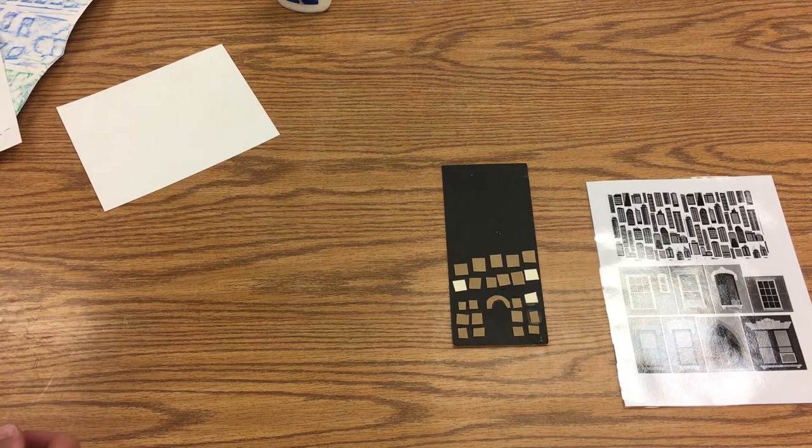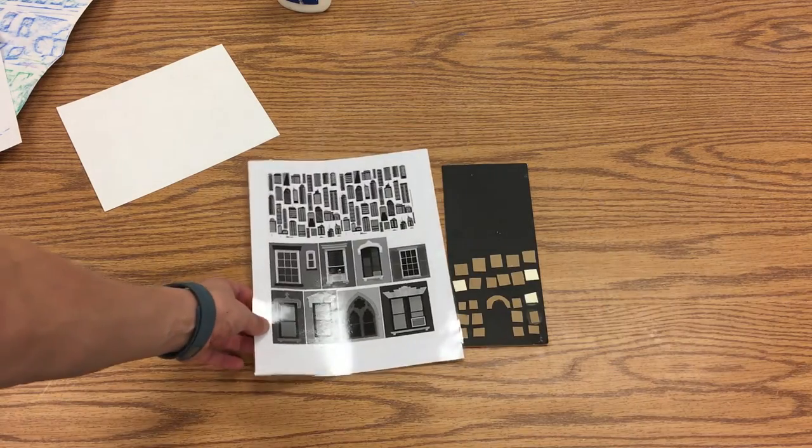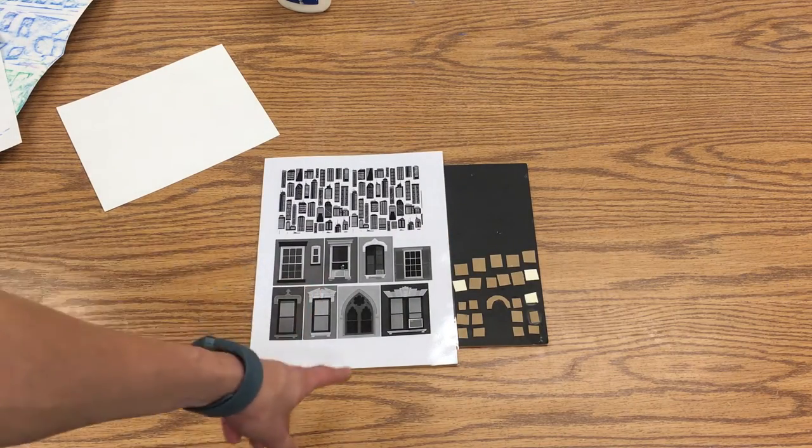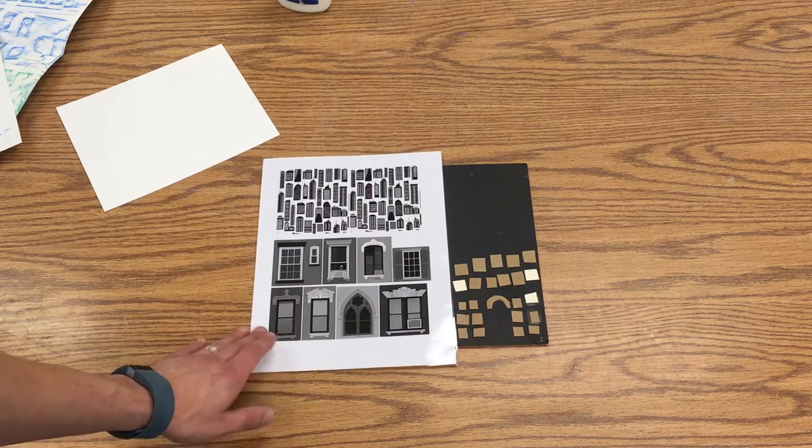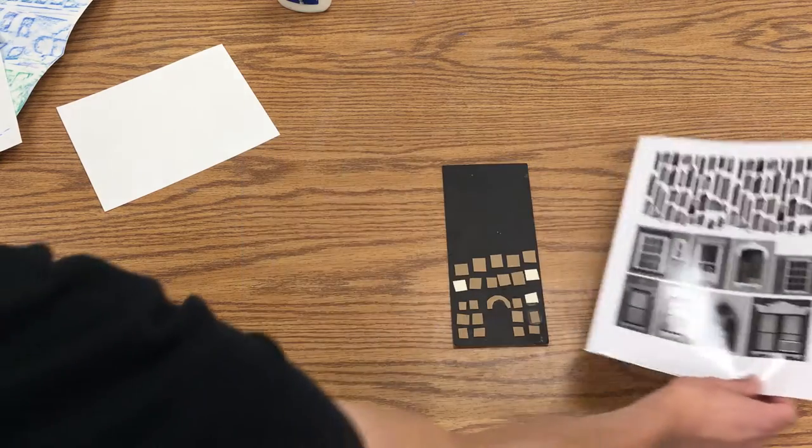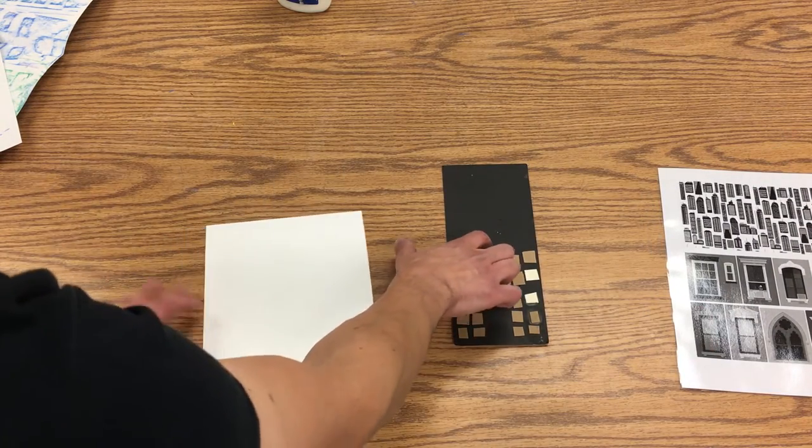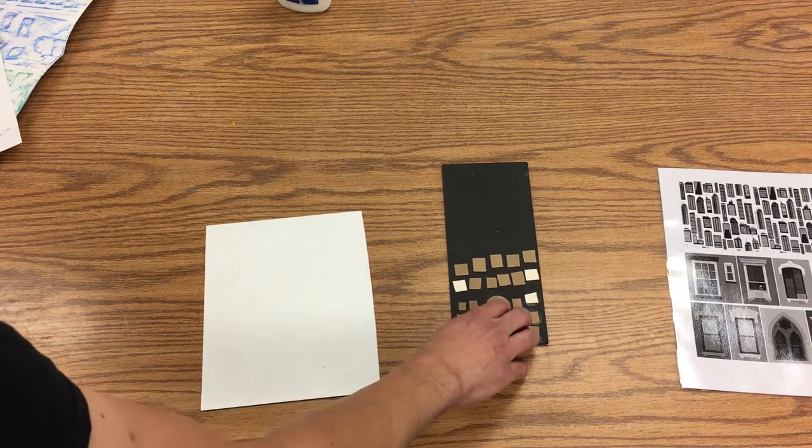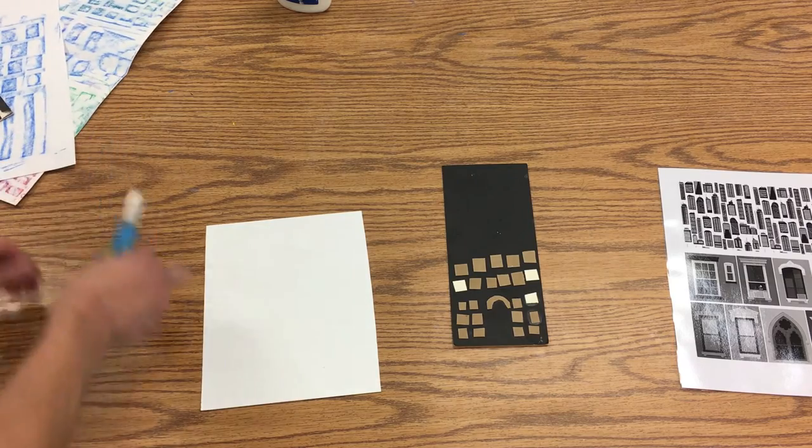I also have this nice reference sheet here that shows different kinds of windows and city buildings and then just different skyscraper designs. But you can take the thinner pieces and glue them on here to make windows and columns and arches and things like that. And when that's all dry you would then be able to do your rubbing.